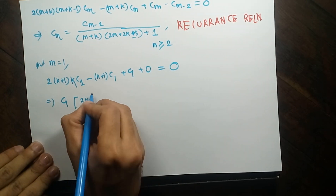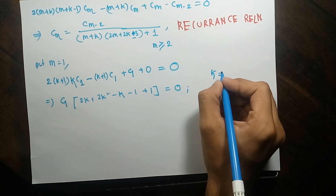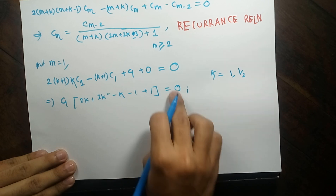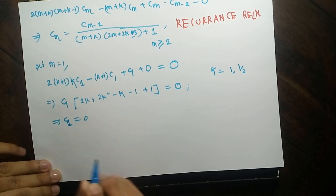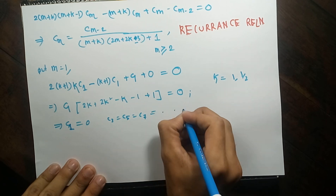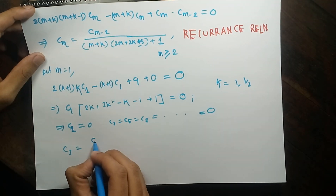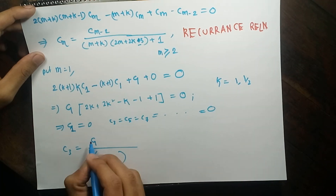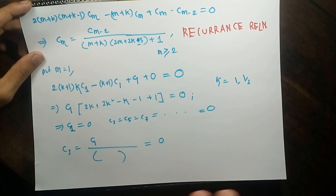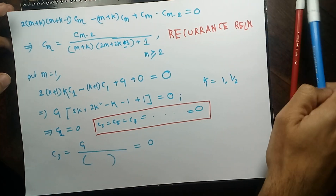Collecting c₁ gives: 2k² + 2k − k − 1 + 1 = 0. We already know k equals 1 and k equals 1/2. Substituting both values shows this expression is never zero, so c₁ must always be zero. Since c₁ = 0, it follows that c₃ = c₅ = c₇ = 0 — all odd-indexed coefficients are zero. This is because each odd coefficient depends on the previous odd one via the recurrence, and they all chain back to c₁ = 0.